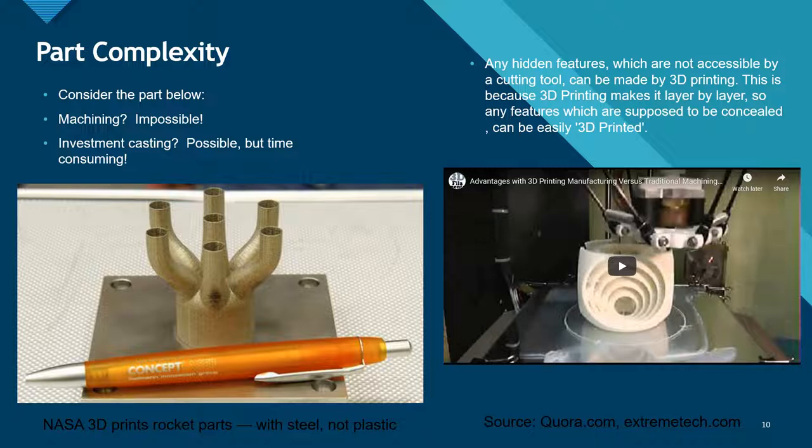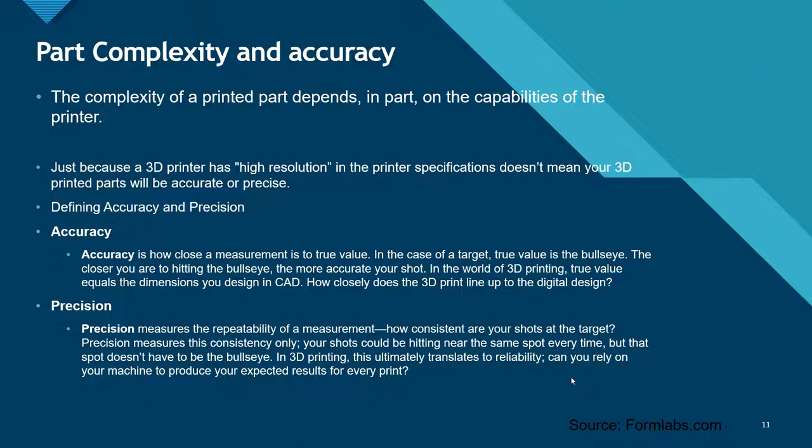To further our comparison we should consider part complexity. For example, if you look at this NASA 3D printed rocket part — it's in steel, not plastic. Could it be machined? Yes, but with great difficulty. Could it be made with investment casting? Yes, but it'd be very time consuming. Any hidden features not accessible by a cutting tool can be made by 3D printing, because 3D printing makes objects layer by layer.